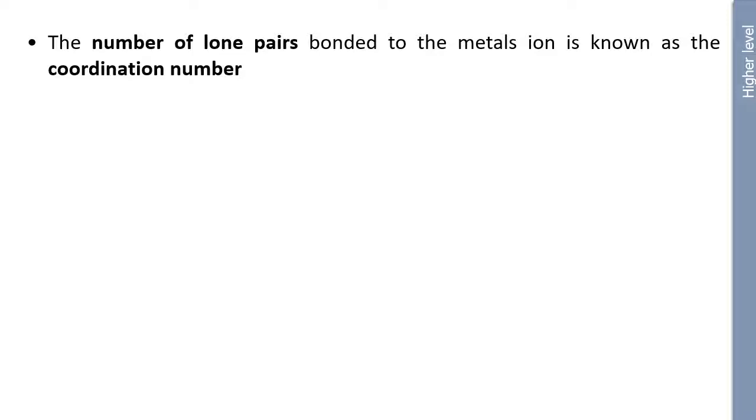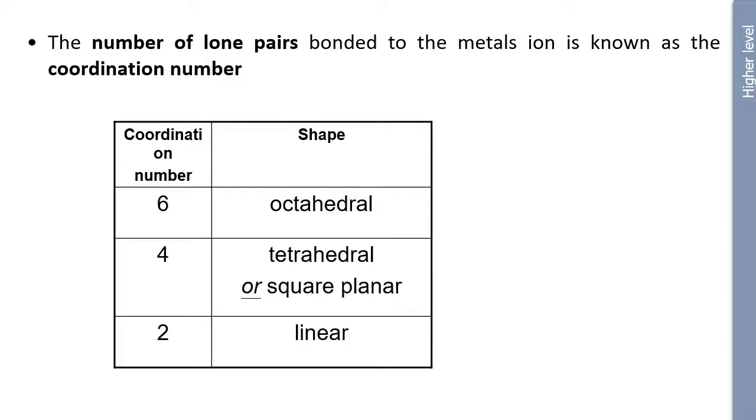So the number of lone pairs bonded to the metal ion is known as the coordination number. So the coordination number of 6, with that shape, is called octahedral. If the coordination number is 4, we call that tetrahedral or square planar, depending on whether it is a planar arrangement around the central ion or whether it is a tetrahedral arrangement. So when I say tetrahedral versus square planar, tetrahedral would be where it's kind of like methane, which you haven't done yet. Yes, we did an organic last year. That's tetrahedral, whereas you've got square planar would be just basically like that, flat. And 2 is linear.